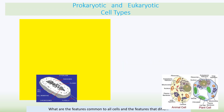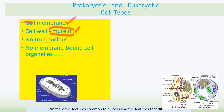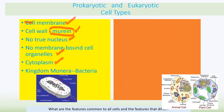Key features of prokaryotic cells: they have a cell membrane like all cells; they have a cell wall made of peptidoglycan (also called murein); they have no true nucleus; they don't have membrane-bound organelles; and they do have cytoplasm. Bacteria are linked to the kingdom Monera.